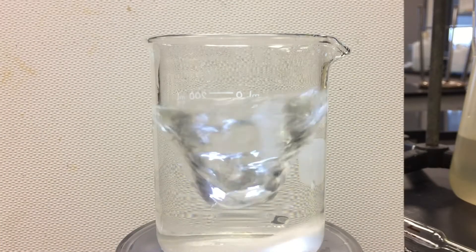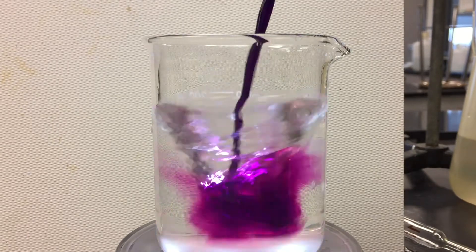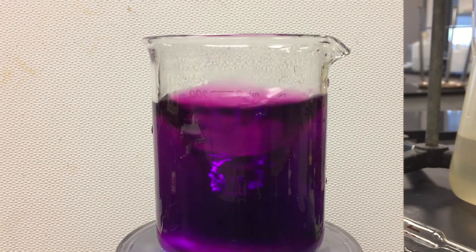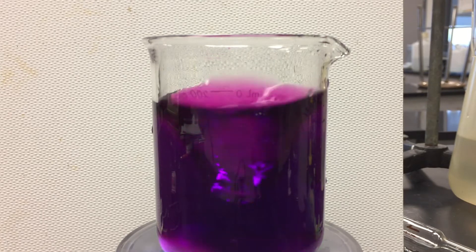Place it on a magnetic stirrer. Add about 3 to 5 ml of 0.02 molar potassium permanganate solution.